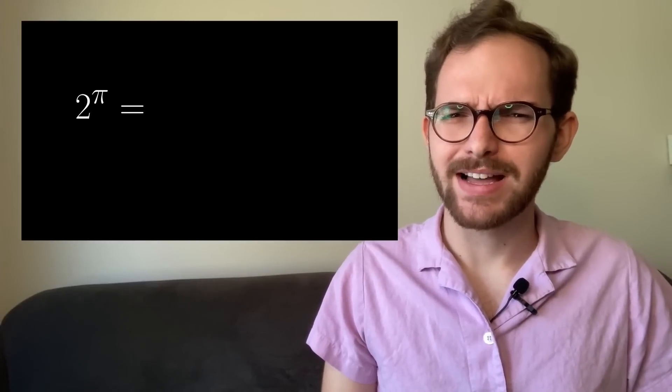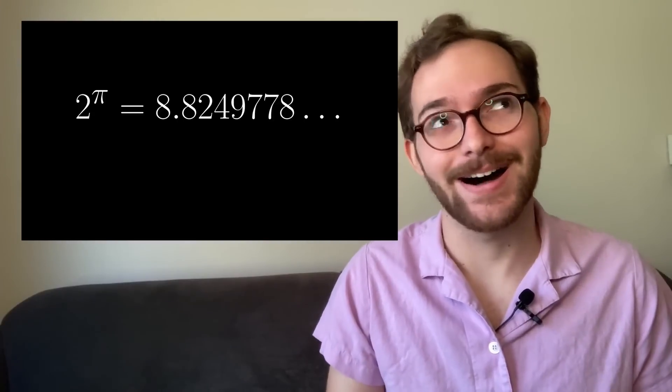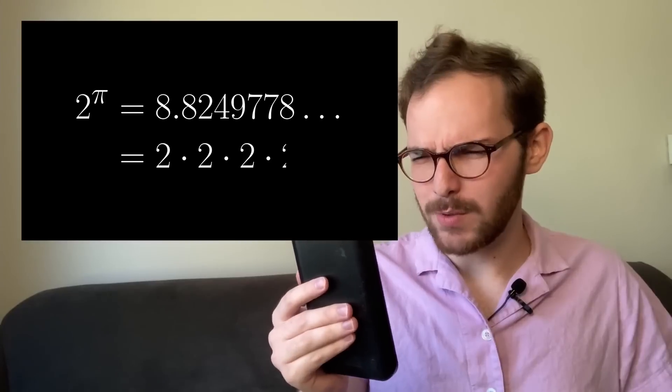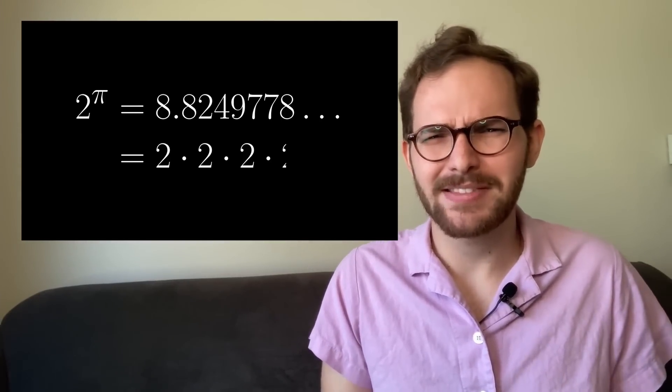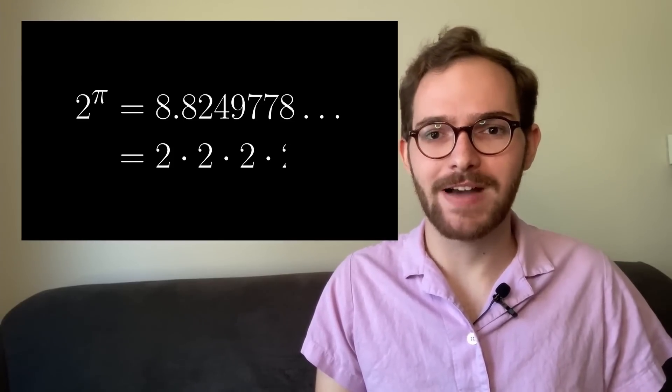What is 2 to the power of pi? Well, I put it into my calculator and it says about 8.82, which I mean is obvious. That's just two times itself pi times—wait, what? How do you multiply something pi times? What's my calculator doing?